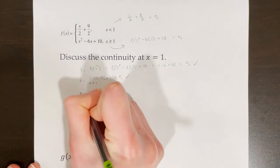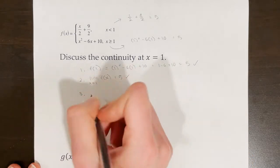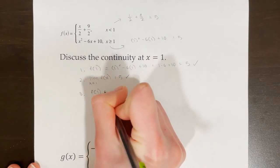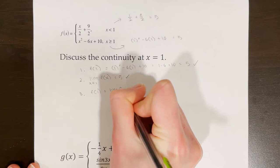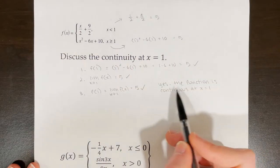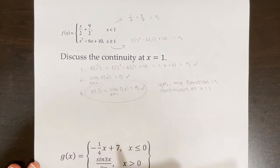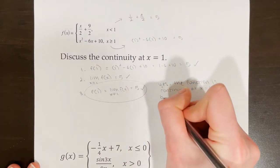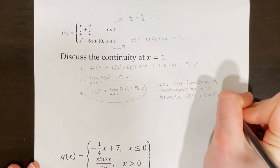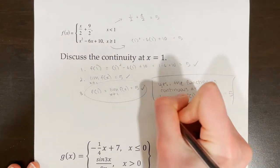Step two works. Step three: is the actual value at the function equal to the limit? Yes — they're both equal to five. So f of one equals the limit as x approaches one of f of x, equals five. We would say yes, the function is continuous at x equals one because f of one equals the limit of f of x as x goes to one, which equals five.